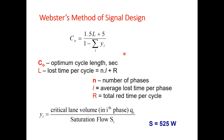The Webster method is very popularly used, and IRC also suggests its use for signal design. The basic equation is: optimum cycle length C₀ = (1.5L + 5) / (1 − ΣYᵢ), where C₀ is the optimum cycle length, L is the total loss time per cycle given by n·l + R (n is number of phases, l is average loss time per phase, R is total all-red time per cycle), and Yᵢ is the critical lane volume divided by saturation flow.